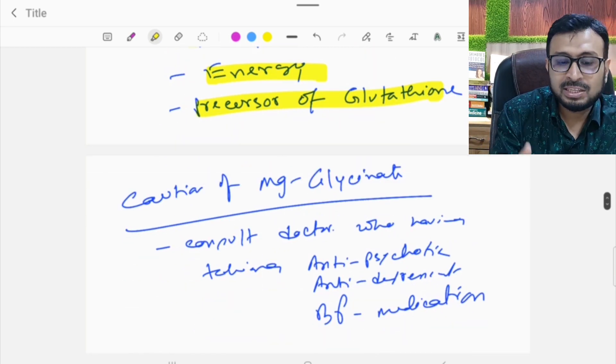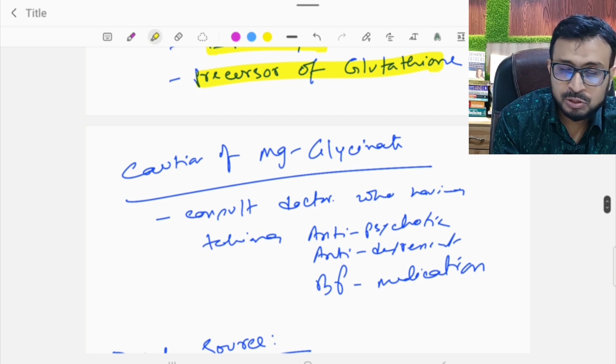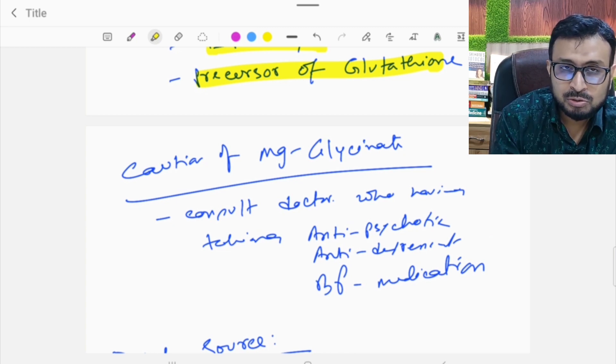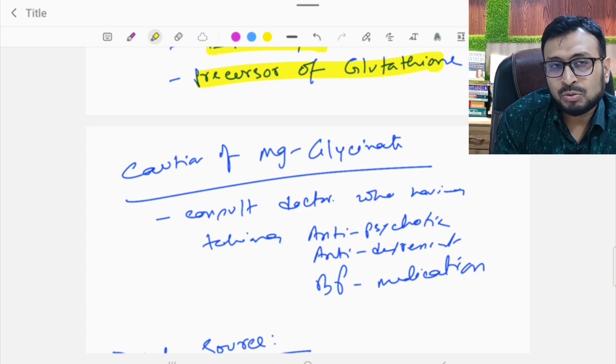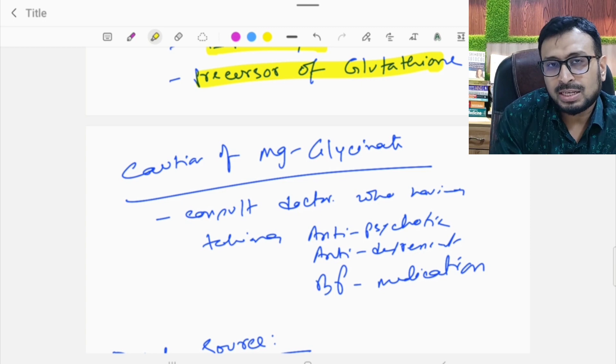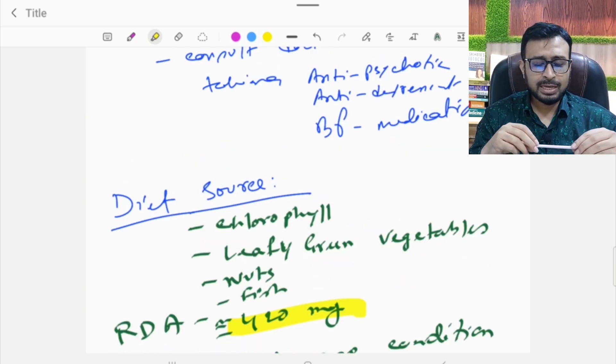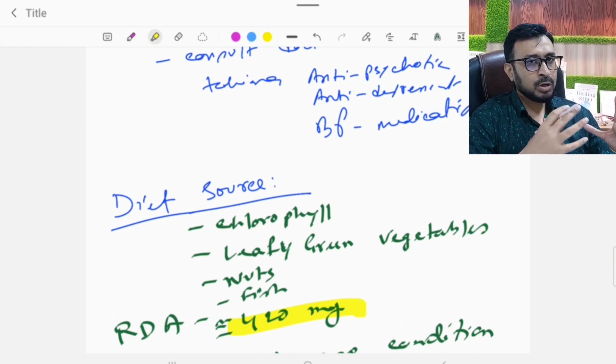Magnesium glycinate is a combined effect supplement. It provides benefits beyond what we would get separately. In the first place, it has anti-anxiety effects, blood pressure control, and helps prevent infections.